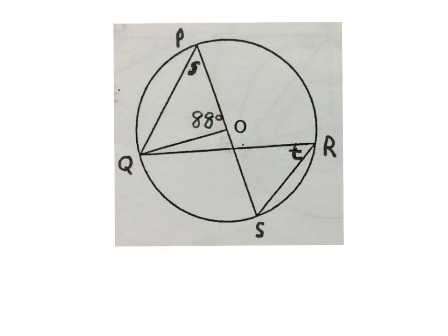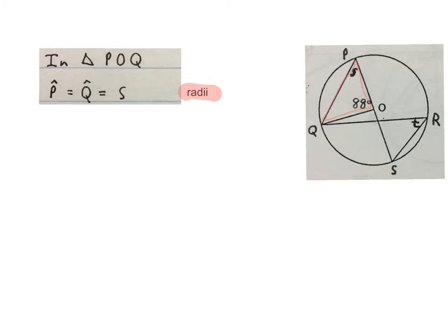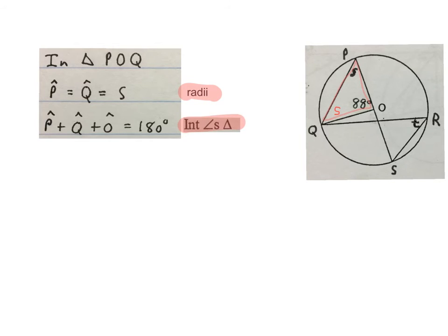In this question we have O as the center of the circle, a diameter running through here, with R, S, Q, and P on the circumference. We have to work out small s and small t. We start in triangle POQ. Angle P equals angle Q equals S because the radii are equal and the angles opposite them will be equal.